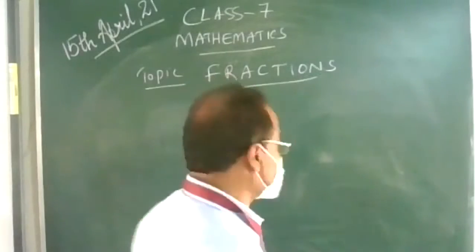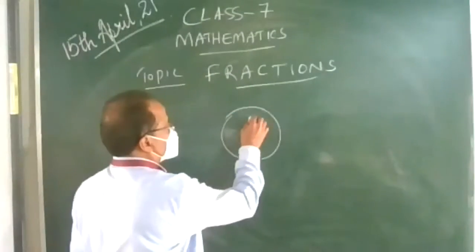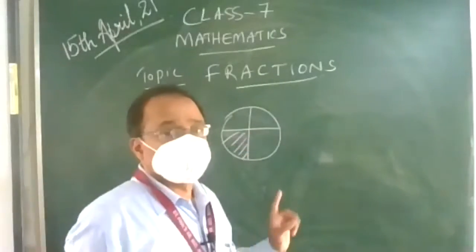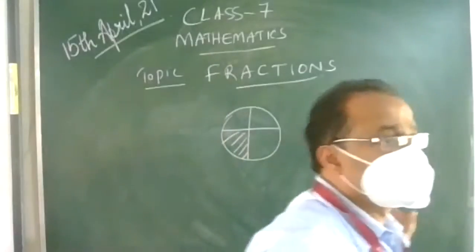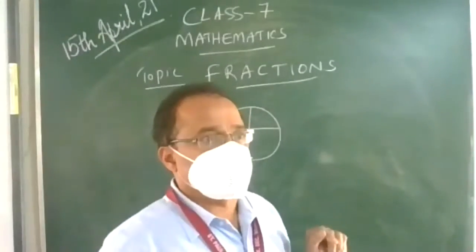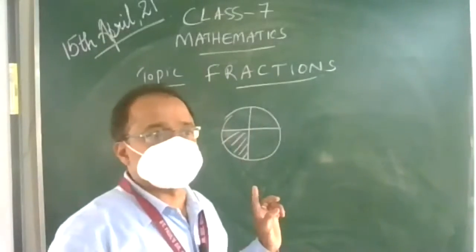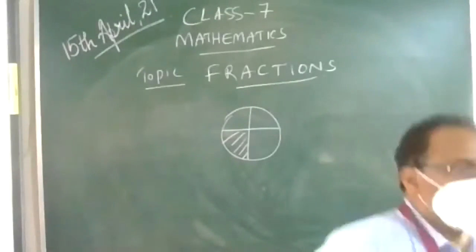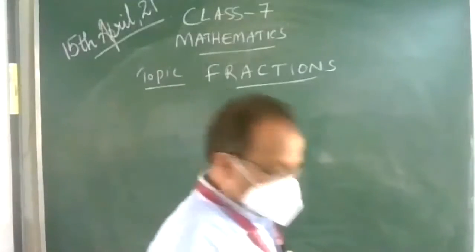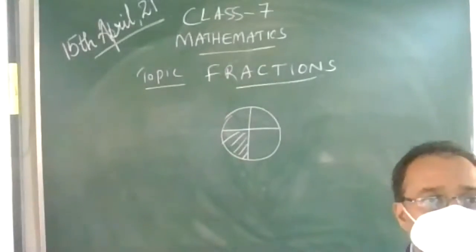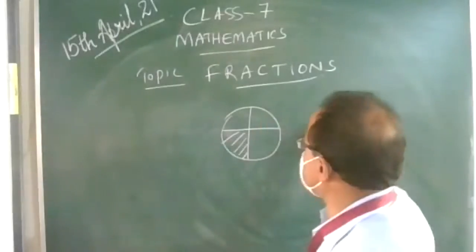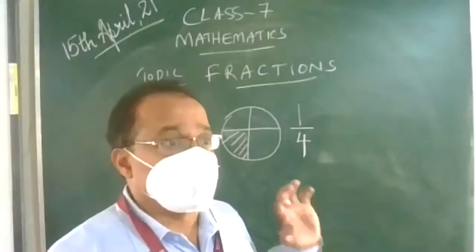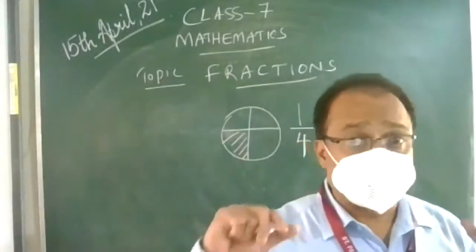For example, look at the figure. This circle is divided into 4 equal parts. Out of this, I have to express this shaded portion. So it could be expressed as 1 out of 4. So, the need of fraction is to express a part of a whole.